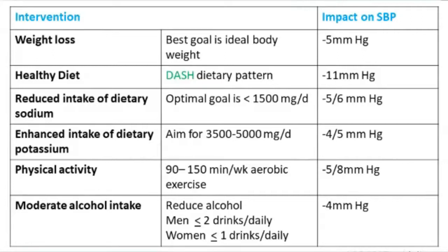Sodium intake should be reduced to less than 1.5 grams per day. You can add salt during cooking, but do not add table salt while sitting and eating. Also avoid highly salty foods like dried fish or pickles, which contain very high salt content in an Indian diet. Enhance potassium intake — dietary potassium, especially rich in many fruits, helps reduce blood pressure. Physical activity proven to reduce blood pressure is about 30 minutes of brisk walking — aerobic activity — five days a week, totaling 150 minutes per week.